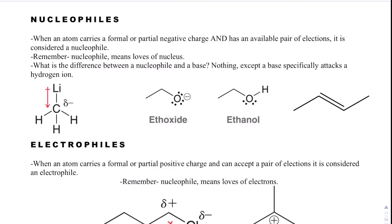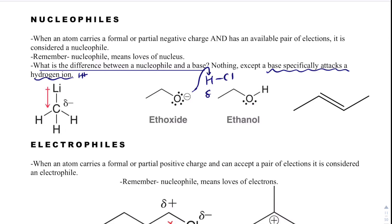One thing you might wonder is: what is the difference between a nucleophile and a base? Nothing, actually. A base is always a nucleophile, and a nucleophile is sometimes a base. The only difference is that a base specifically attacks H+. So if oxygen attacks HCl — with hydrogen being delta-positive — that's an acid-base reaction.